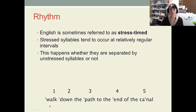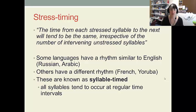We can see that we have five stressed syllables: walk, down, path, end, and now. And the idea is that it takes equal amounts of time to get from one stressed syllable to the next. So what this means is that it would take the same amount of time roughly to say the word 'walk' as it would to say 'end of the canal'. So stress timing can be defined as: the time from each stressed syllable to the next will tend to be the same, irrespective of the number of intervening syllables.